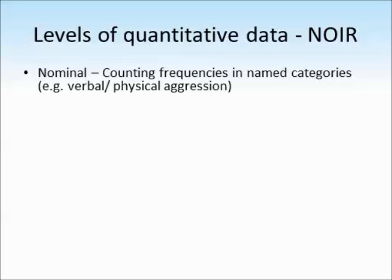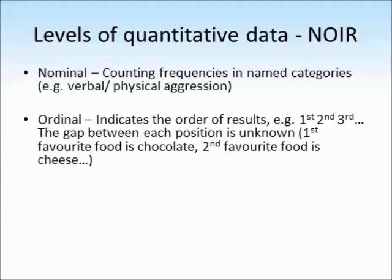So here it just means counting frequencies in named categories such as verbal or physical acts of aggression. The next kind of data is called ordinal and as the name suggests this indicates the order of the results. So for example think of this like a race where somebody comes first, someone comes second and someone comes third. The gap between each position is unknown.